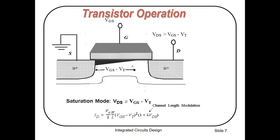If you keep increasing the drain voltage until it becomes greater than Vgs minus Vt, you can see channel pinch-off. A constant current then flows between drain and source — this is the saturation region. The equation for Id in saturation shows that Vds is greater than Vgs minus Vt. Here lambda (λ) is called channel length modulation; for simplicity, we usually take lambda equal to zero in simple calculations.